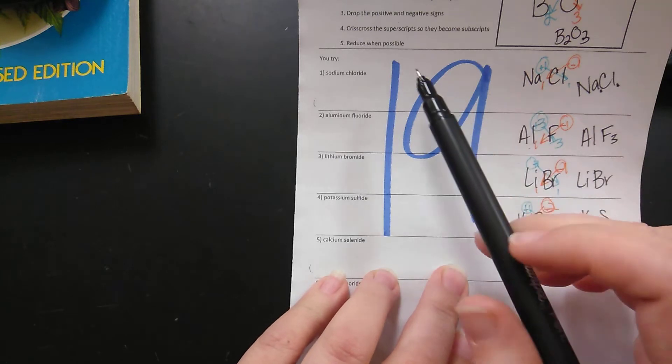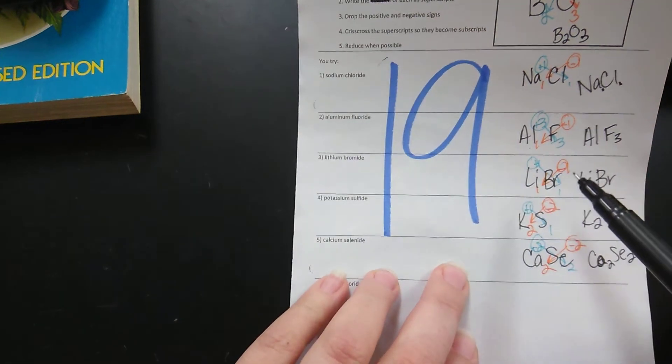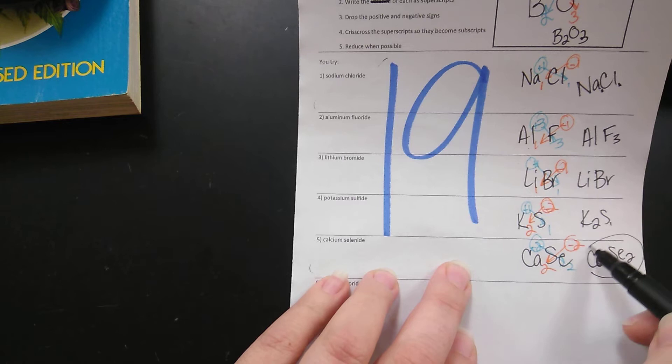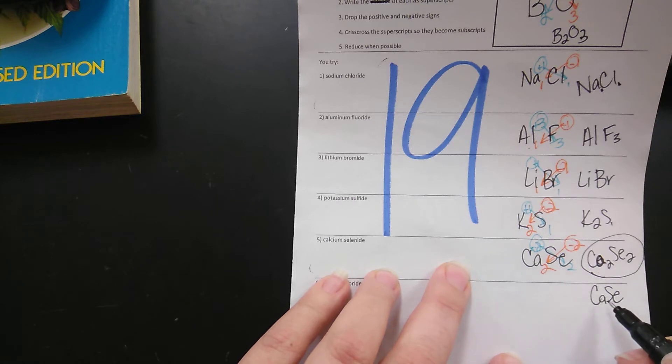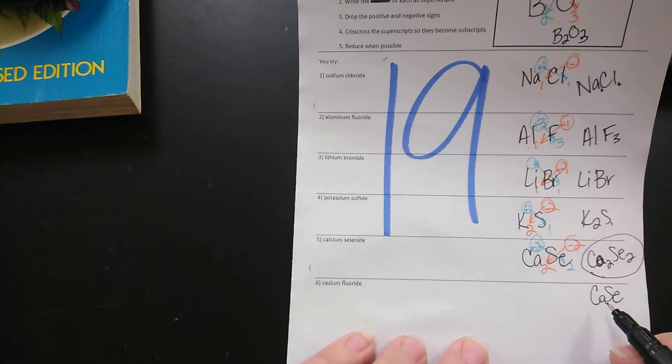Here it says up here that we can reduce when possible but for right now I'm not absolutely certain so I would leave it unsimplified but if you were to see a multiple choice answer that only had CaSe I would pick that one because that would be simplified. But for best practices do not simplify because I'm not certain.